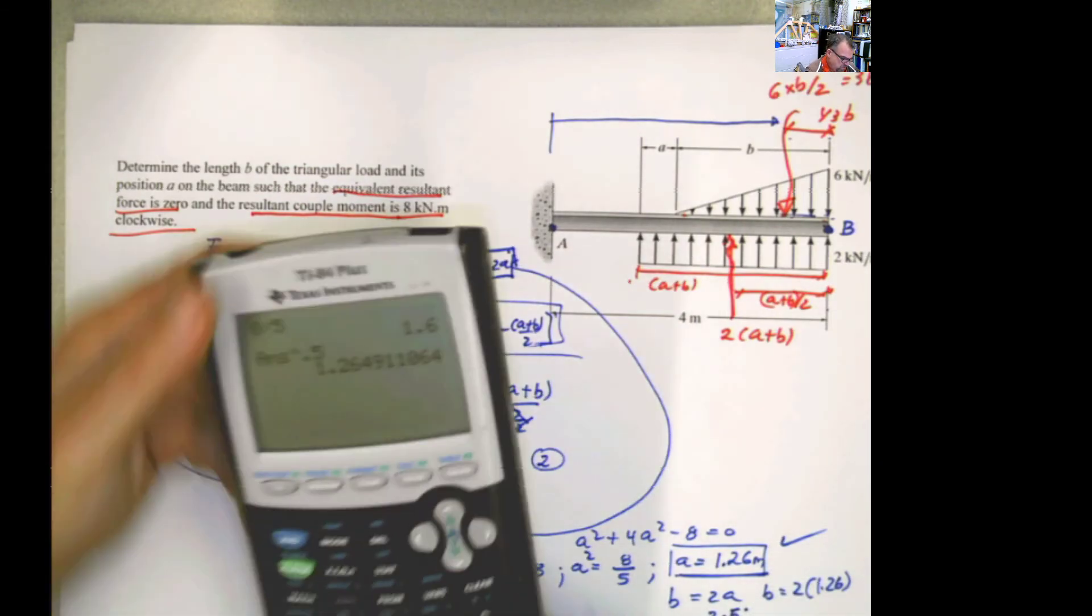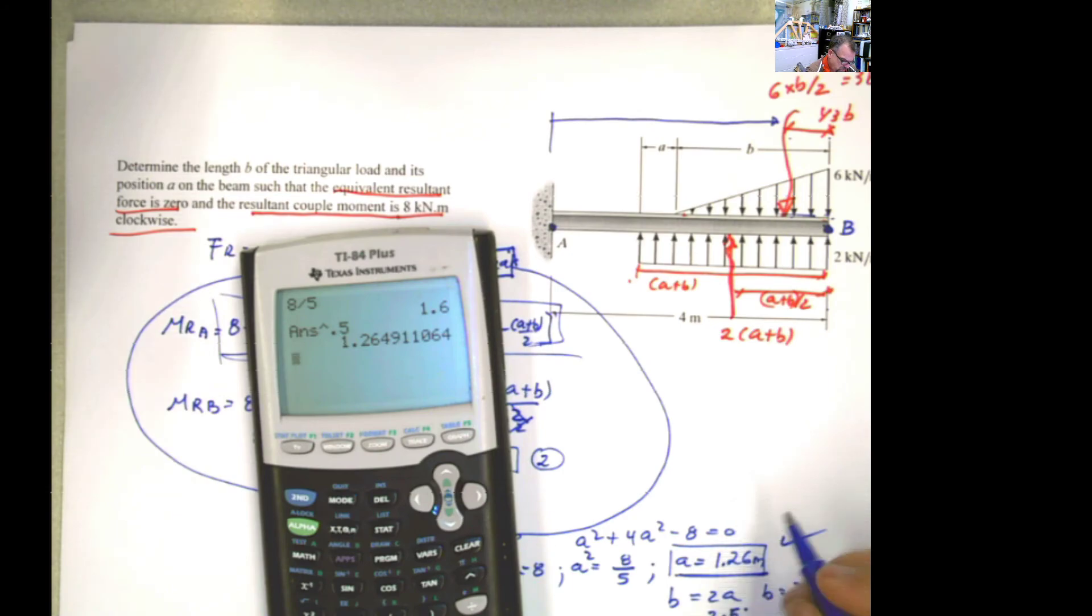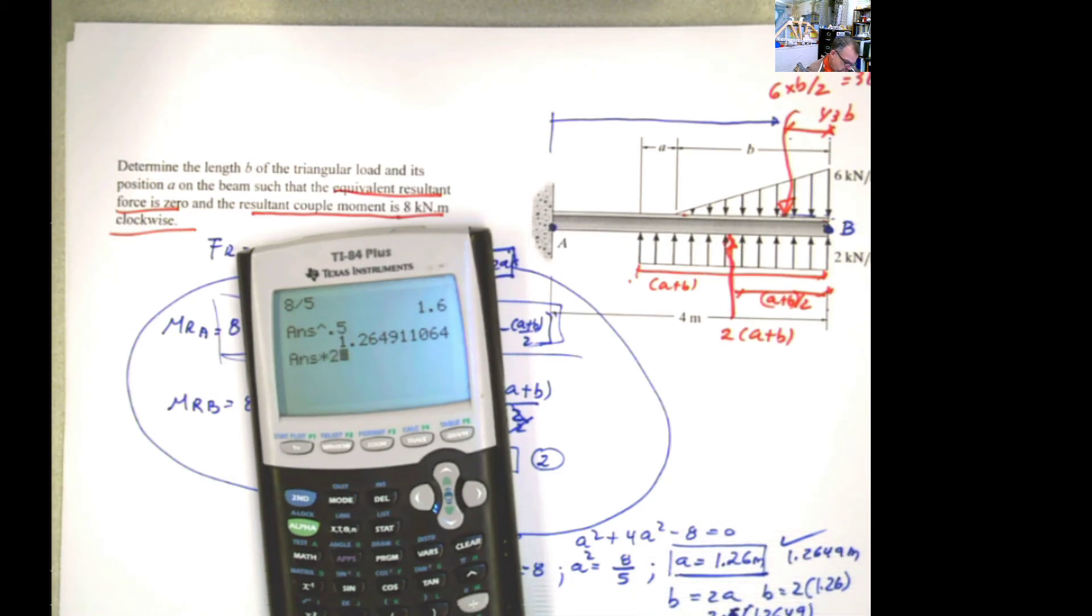But actually, it's not 2.52 because this number is, I don't know why I'm putting 126 if I never do that. I like to put four decimals. So 1.2649 meters. If I multiply that 2 times a, and a is 1.2649, b will be equals 2.5298 meters.